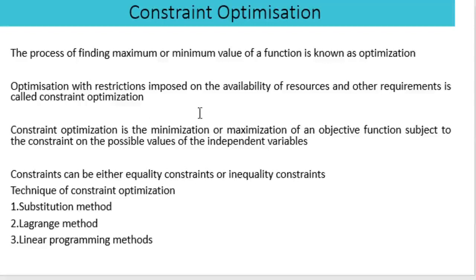Optimization is the process of finding the minimum and maximum value of a function. In constraint optimization, we take into account the constraints of that process — that is, the minimization or maximization of an objective function subject to the constraint on the possible value of the independent variables.